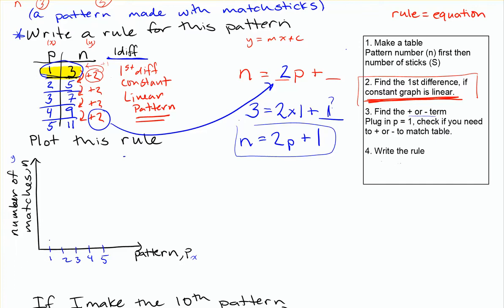So pattern number 1, I know that I need 3. So 1, 2, 3. And pattern number 2, I've got 2 and 5. So pattern number 2, I need 5 matchsticks for 5. Pattern number 3 is going to be up 6, 7.